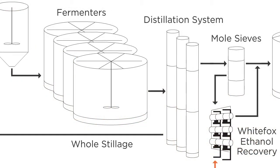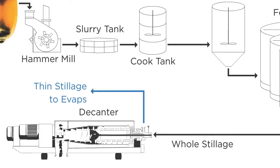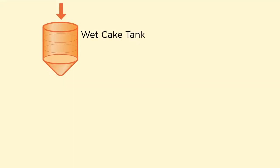You can see once the whole stillage comes out of the distillation system, it goes through a decanter and the wet cake is then conveyed to the start of the D3 Max process.